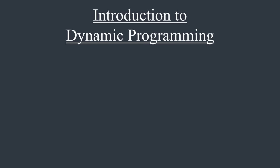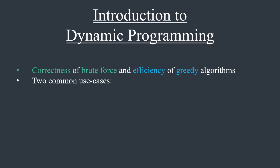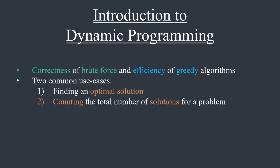Dynamic programming is a powerful design technique that combines the correctness of brute force and the efficiency of greedy algorithms. There are two common use cases for it: finding an optimal solution, for example finding a minimum or maximum answer, or counting the total number of solutions that some problem may have. These are not the only types of problems that DP solves, but they're the most common.